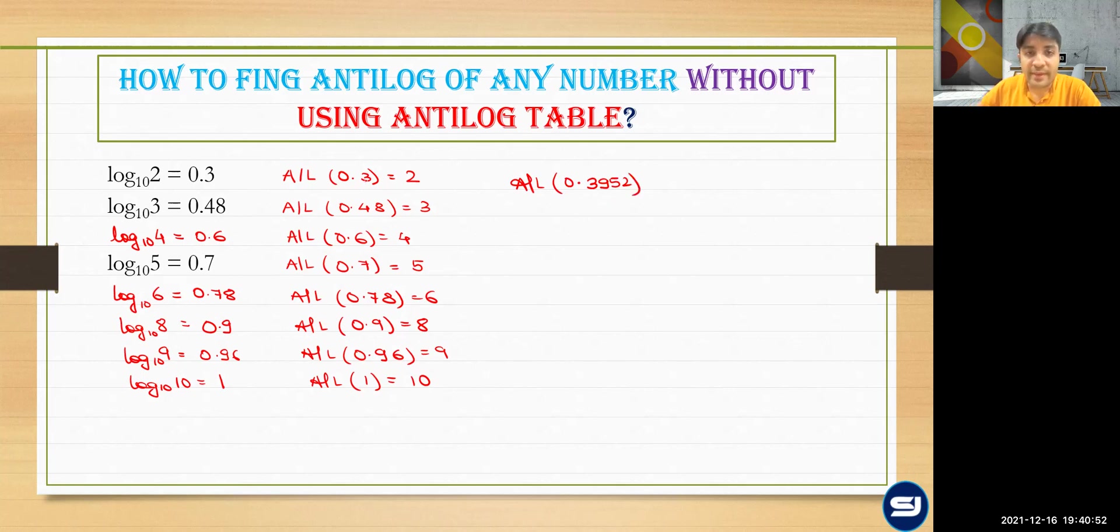if you observe is in between 0.3 and 0.48. So if antilog of 0.3 is two and antilog of 0.48 is three, so the antilog of this number is going to be between two and three. And it is kind of average of 0.3 and 0.48, matlab approximately the middle value, which is 2.5.